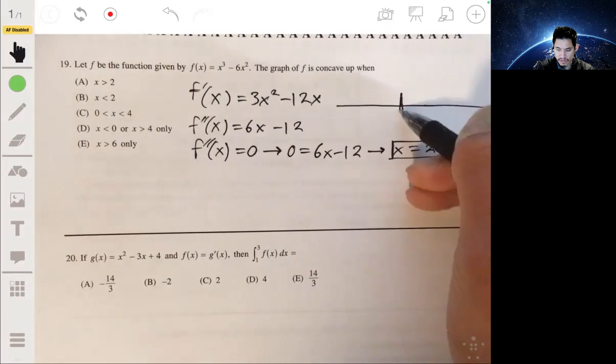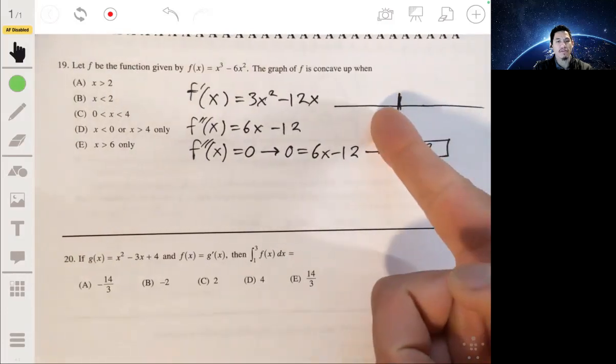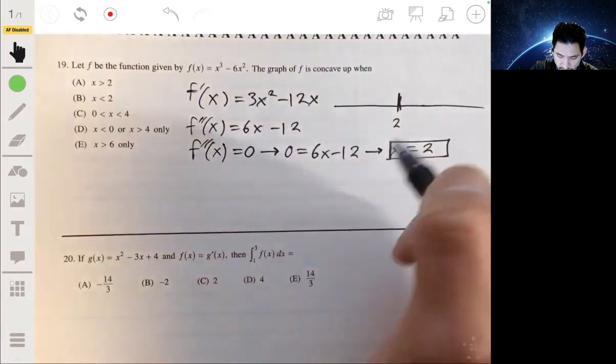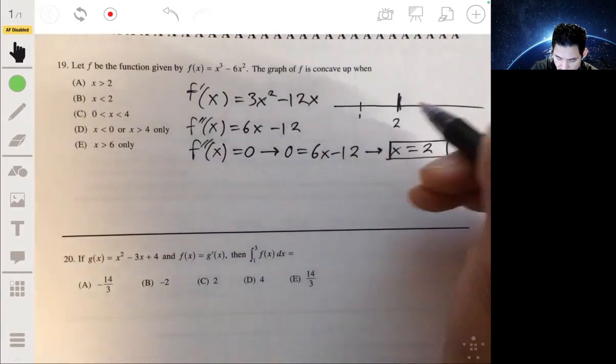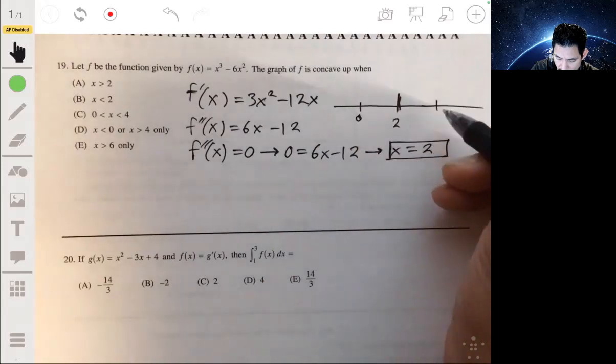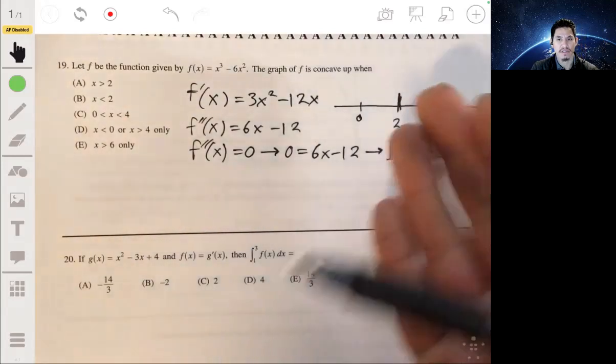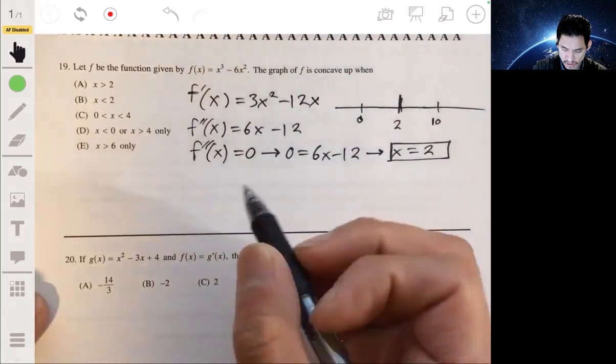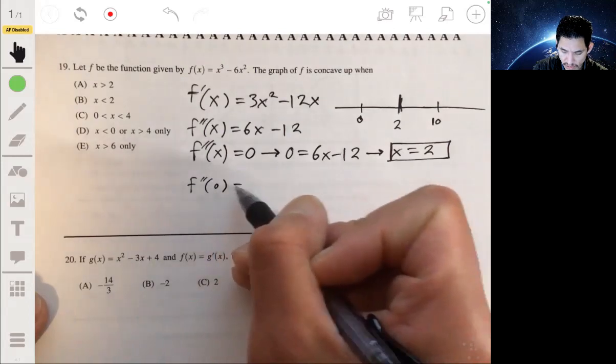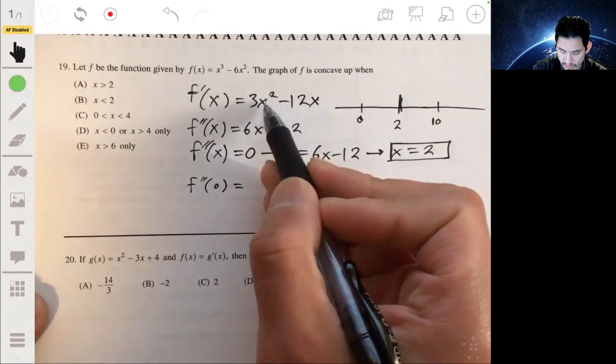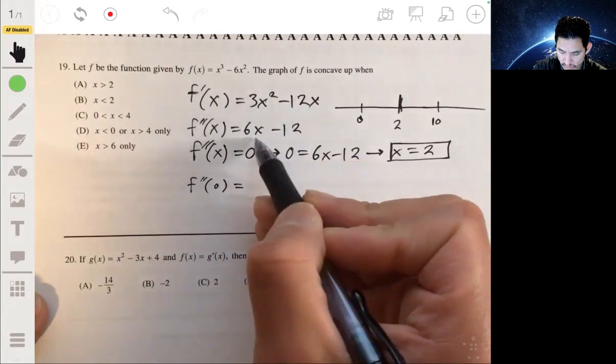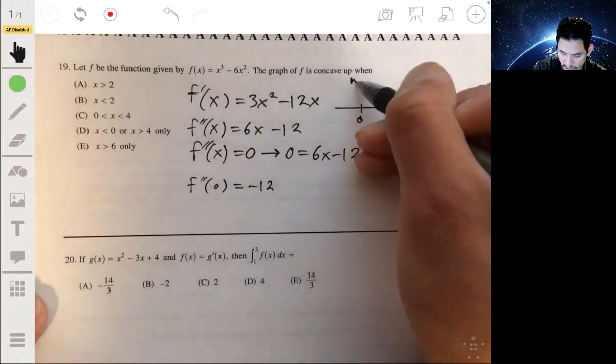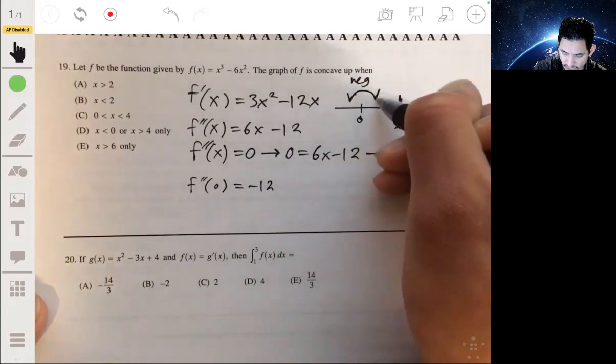So then we just study around 2. We want to see what's going on before 2 and what's going on after 2. And we only really care about the sign. So let's just plug in 1, let's plug in 0, and plug in 10. It doesn't matter what values as long as they're outside of that interval, or as long as they're not equal to 2. So f double prime of 0 would just be negative 12. So this is a negative number, so that means the graph is concave down.